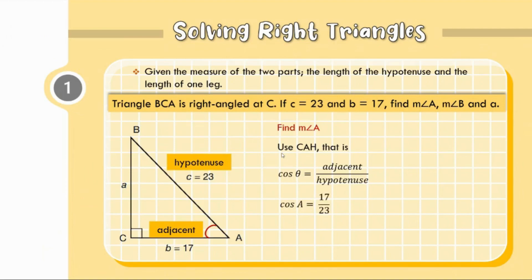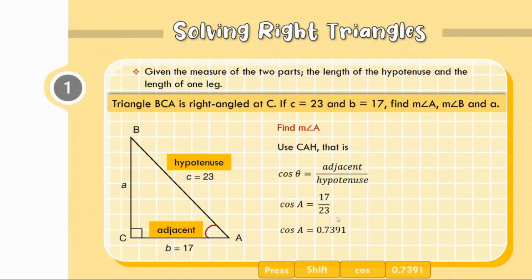Therefore, cosine A is equal to 17 over 23. Dividing, we get 0.7391. To find the measure of angle A, use the calculator: press Shift, cosine, then 0.7391. Rounding to the nearest degree, measure of angle A is equal to 42 degrees.